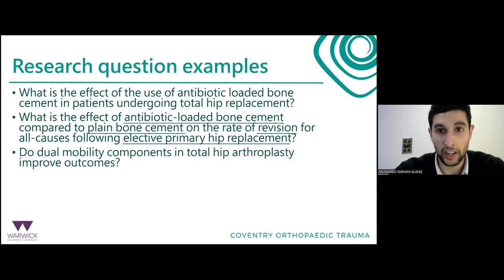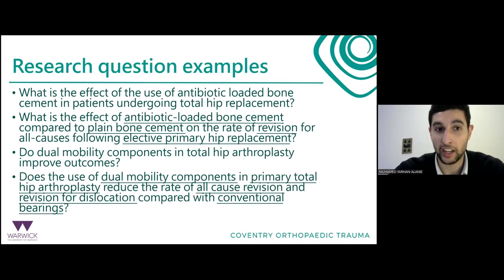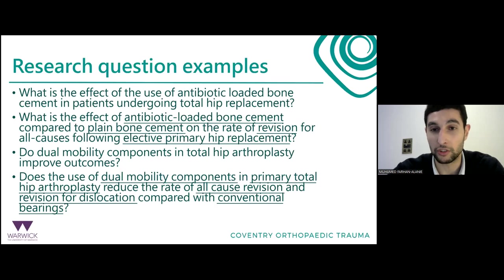Here's another example: 'Do dual mobility components in total hip arthroplasty improve outcomes?' — 80% of participants rated this as poor. It could be better phrased as: 'Does the use of dual mobility components in primary total hip arthroplasty reduce the rate of all-cause revision and revision for dislocation compared with conventional bearings?' That makes it clear what the intervention, population, outcomes, and comparison group are.